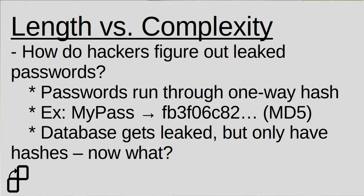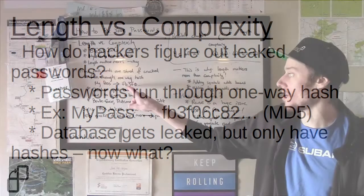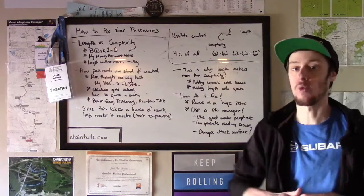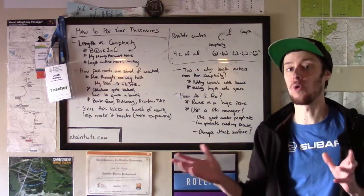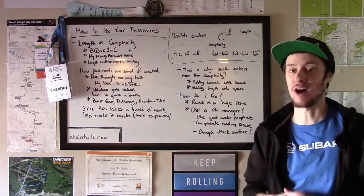What Facebook does is they run that password through a completely one-way irreversible function called a hash function that gives an output that's the same every time you run that same string through that function. So for example, mypass gives the hash starting with FB3F011 run through the old and insecure MD5 hash function.